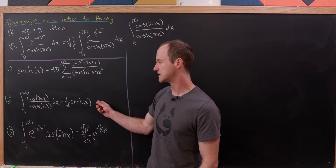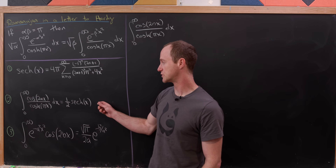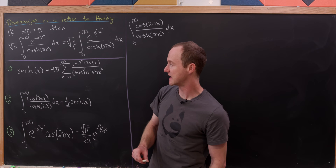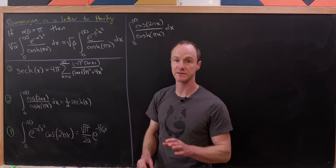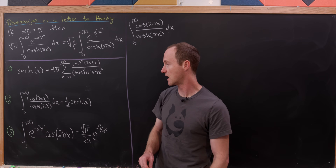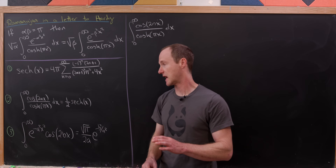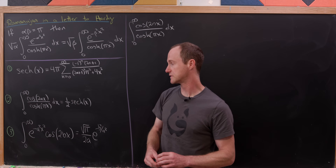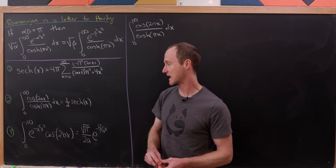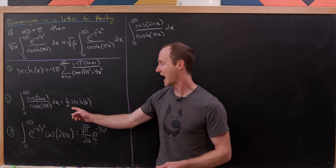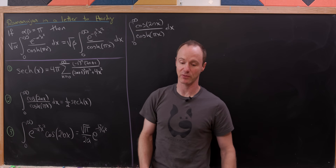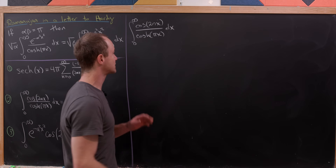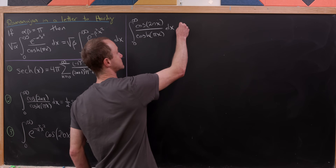We're also going to use a second tool which we will derive now: the integral from zero to infinity of cosine(2nx) over hyperbolic cosine(pi x) equals one half times the hyperbolic secant of n. Let's jump into that.